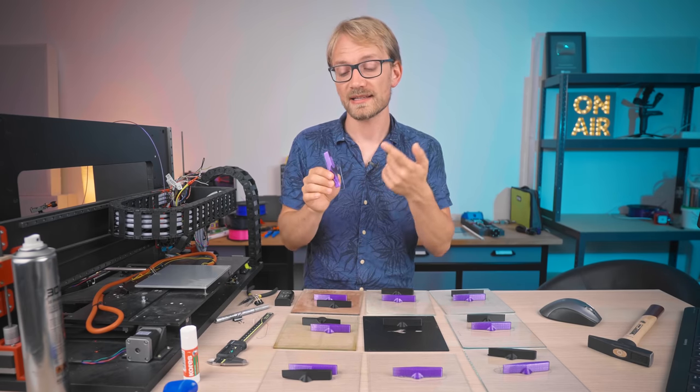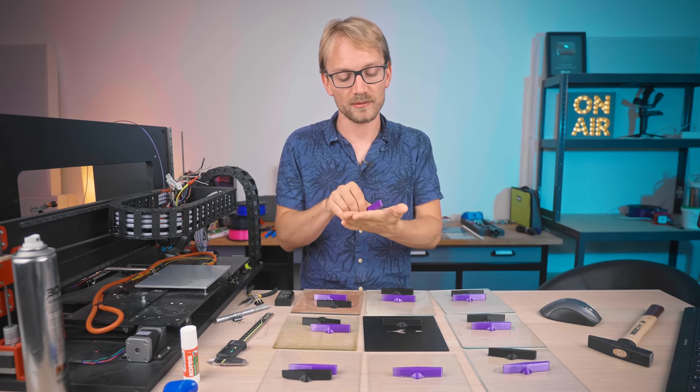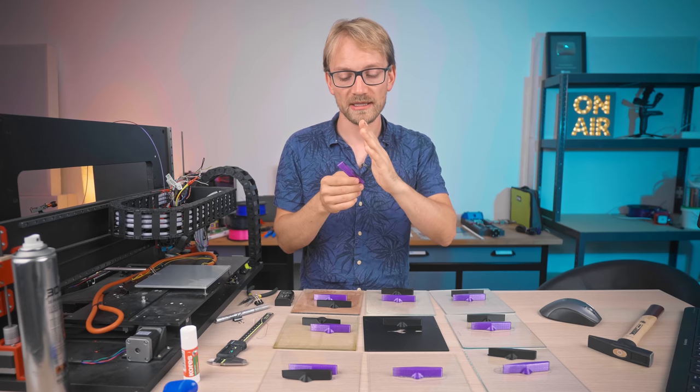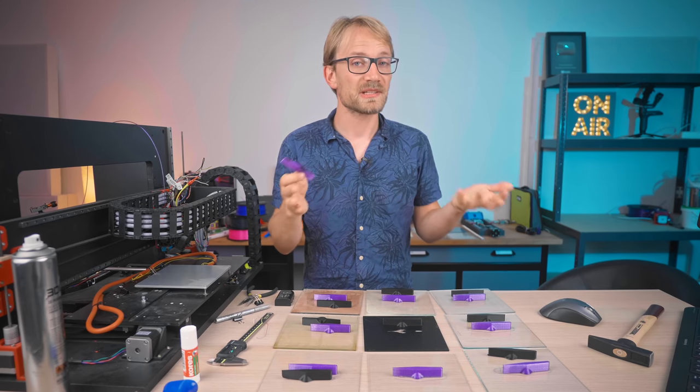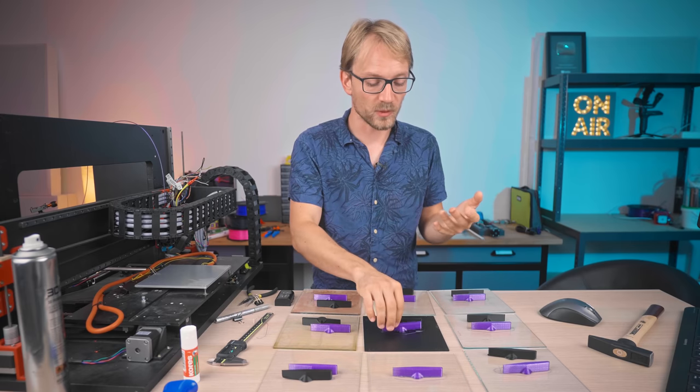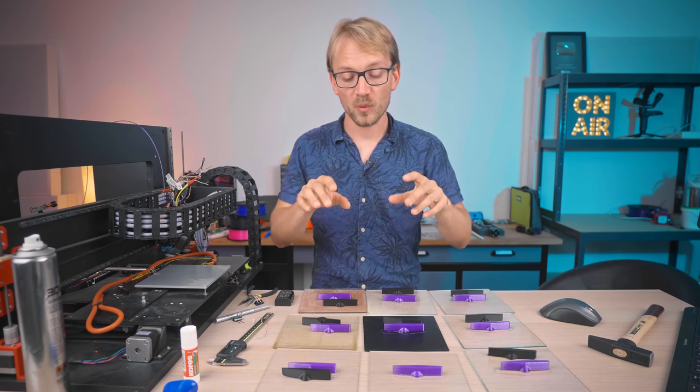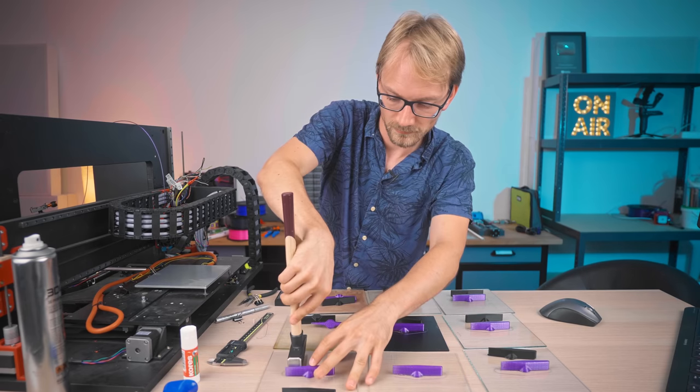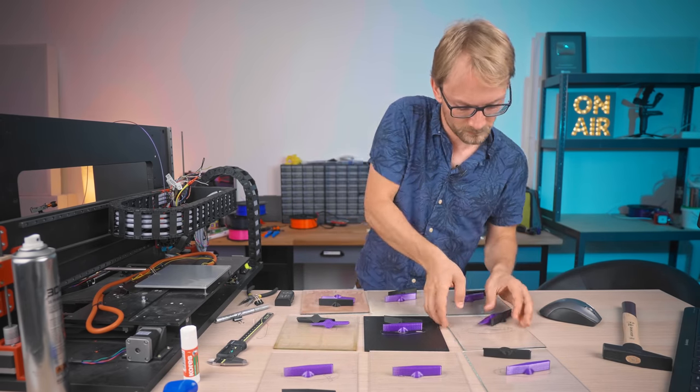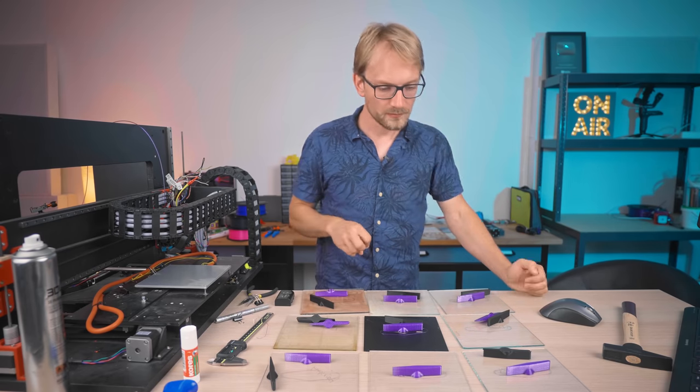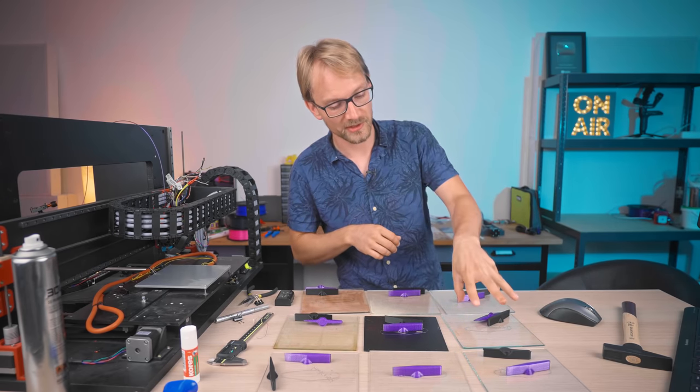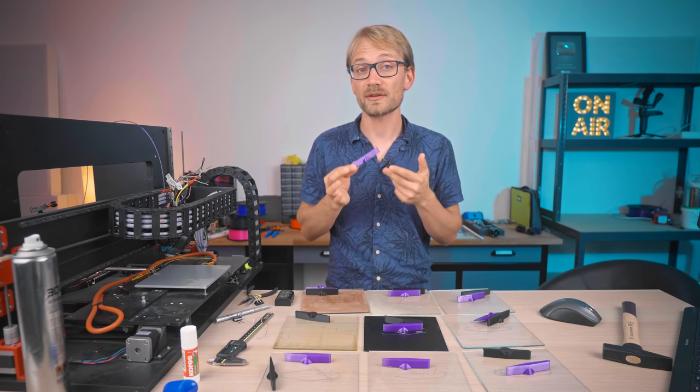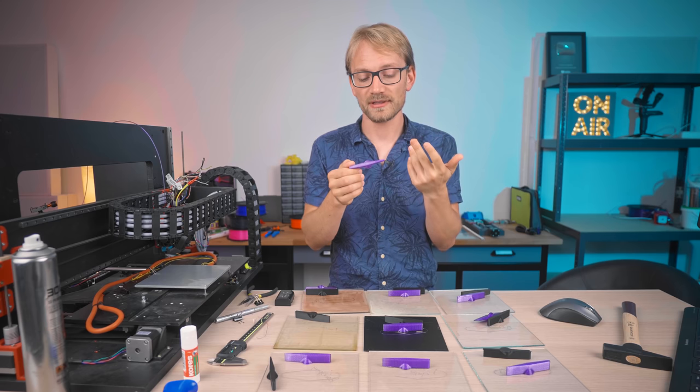One note on these PETG prints is that I set the nozzle a bit lower. I recalibrated that with a piece of paper, so this first layer is smooshed down a bit better. That might explain a part of why the PETG actually stuck down better than the PLA, but still, if a material does not want to hold down PETG, it wouldn't have worked here. Let me break free the rest of these parts real quick and we can see which of these coatings actually survived and which are single-use.